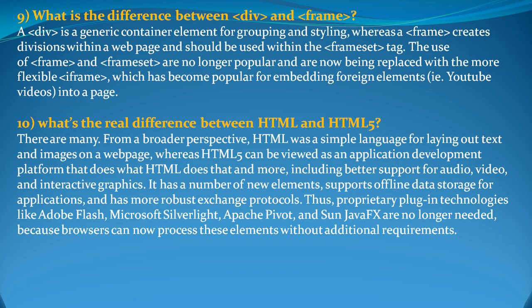What is the difference between div and frame? A div is a generic container for grouping elements and styling. A frame, on the other hand, creates a division within the web page and should be used within the frameset tag. However, the use of frame and frameset are no longer popular as they have been replaced by the much more flexible iframe tag, which has become highly popular for embedding foreign elements. For example, YouTube videos can now fit into a page — all thanks to the iframe.